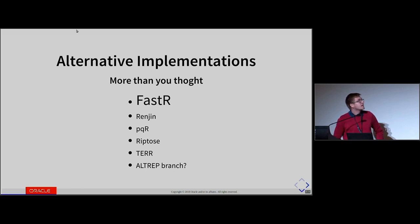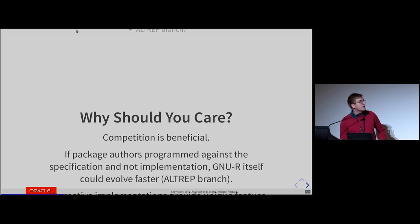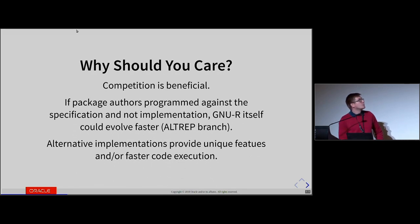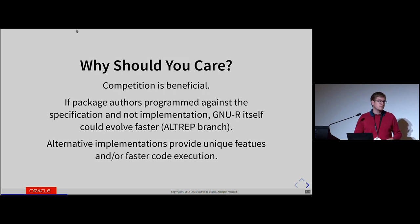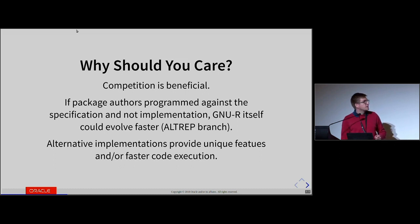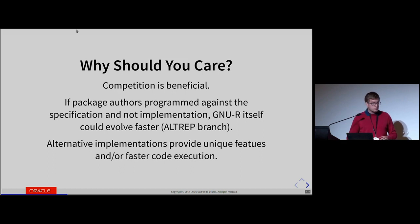There are alternative implementations, maybe more than you thought. We'll focus on the one we're implementing at Oracle Labs, and that's FastR. Why should you care? First, competition is beneficial for end users. Second, this could be beneficial to GnuR itself, because if FastR or other alternative implementations were used in practice, people would tend to program against the specification, not against the concrete implementation which is GnuR. That would make life easier even for core GnuR developers. Alternative implementations either execute R code faster or provide some additional features.